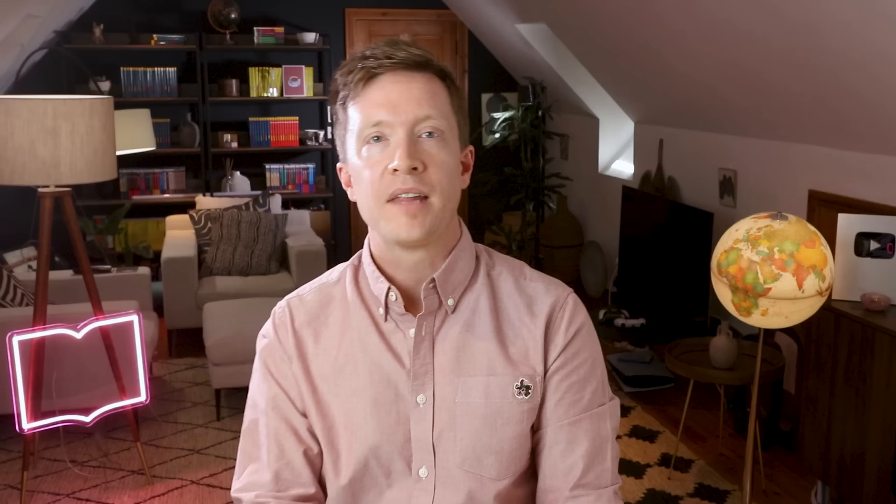The letter Ba has a dot on the bottom. The next is Ta, and then Tha — you'll spot several letters that look the same, so the dots are really important to know which consonant you're reading. As for those missing vowels, vowel sounds do exist in Arabic — there are three short and three long ones.